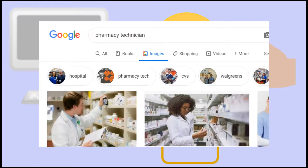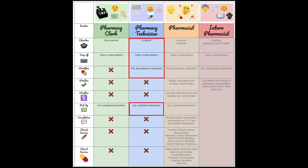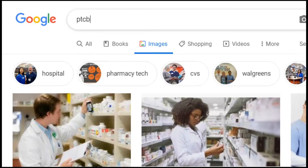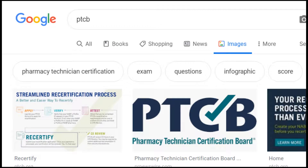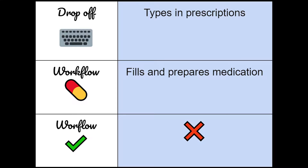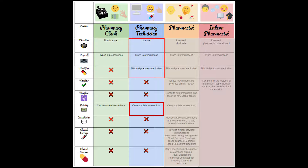A pharmacy technician is a staff member who is licensed after completing requirements with the board of pharmacy, such as going through a training program or completing a competency examination. Because of this training, they are able to type, fill, and prepare medications. They may also perform the same responsibilities as a clerk.